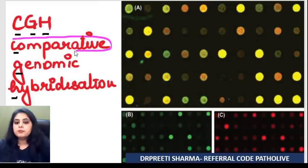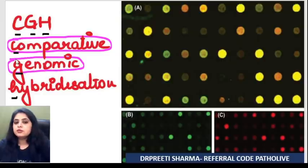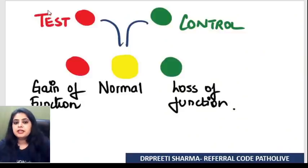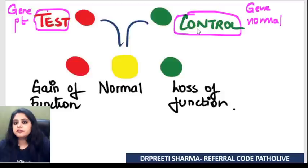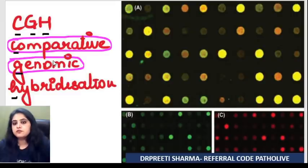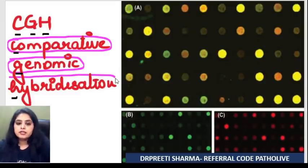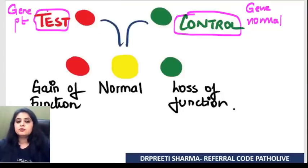What are you going to compare? The genes of your patient versus the genes of a normal person. The patient becomes your test, the normal person becomes your control. So you are comparing the genome of a patient with a normal person by hybridization — Comparative Genomic Hybridization.